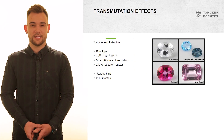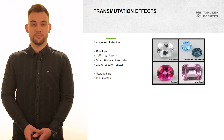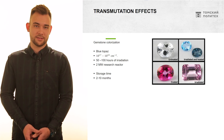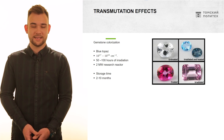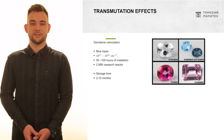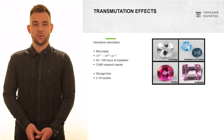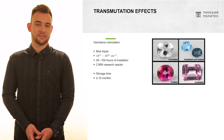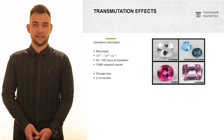Let's go to the first application of radiation transmutation, and this is the most beautiful application: gemstone colorization. Usually topaz or diamonds are used. When they are irradiated with gamma rays or with neutrons combined, they change their color due to defects in their crystal structure. The color you obtain will depend on their basic structure, the type of radiation, the time of irradiation, and following procedures like annealing.